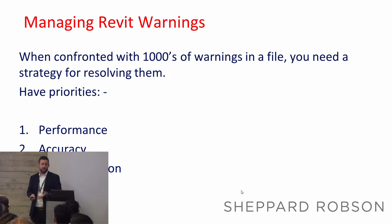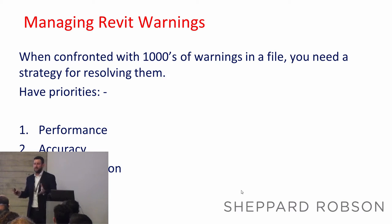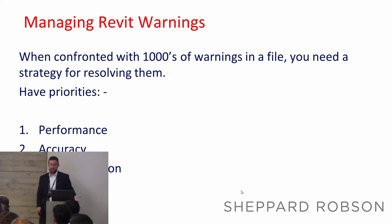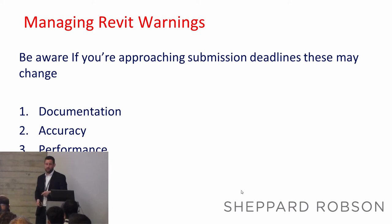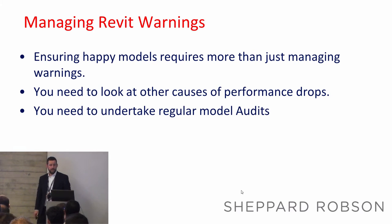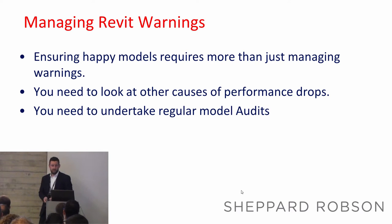When confronted with thousands of warnings, you need to look at priorities. Number one is model performance — you want to maintain that. Then the accuracy of the information held within, and then documentation. But as stage deadlines approach, these priorities tend to flip: documentation becomes priority, accuracy remains paramount, and model performance drops — which is one of the reasons warnings spike. Ensuring happy teams means managing these warnings, because you don't want to see performance drop and warnings increase.